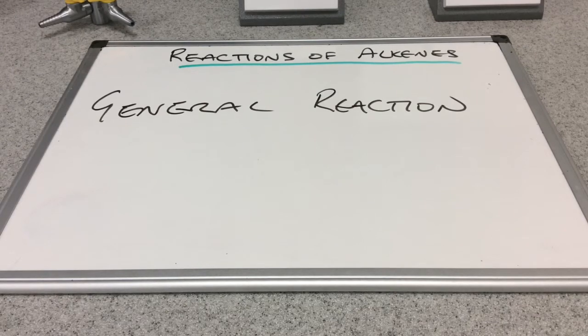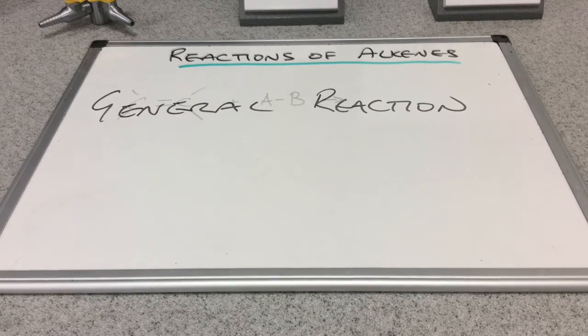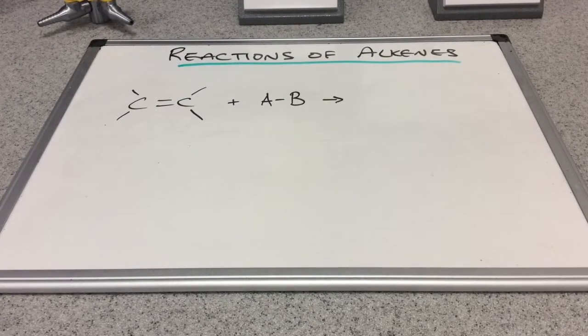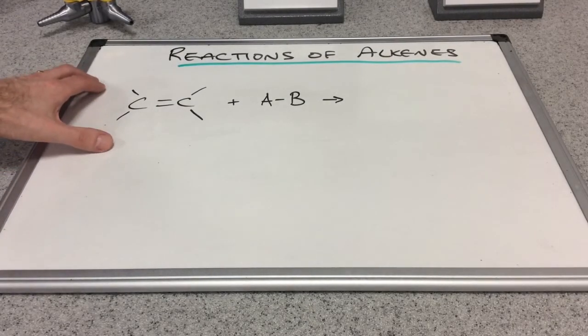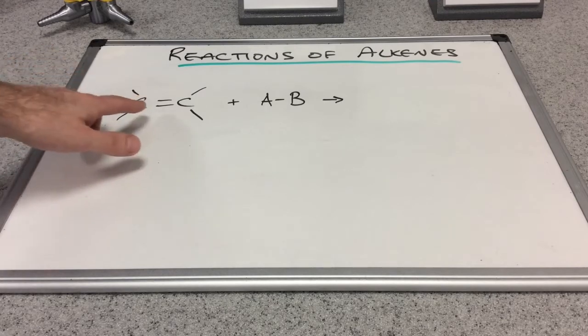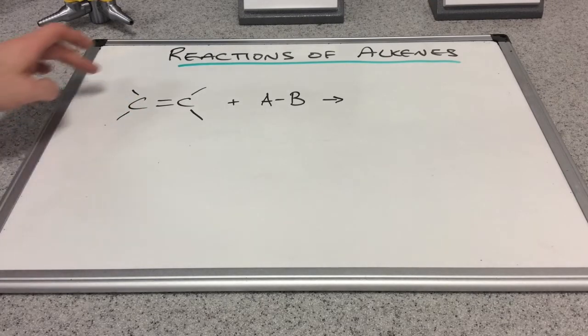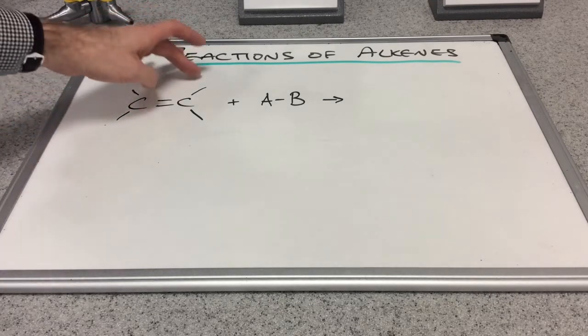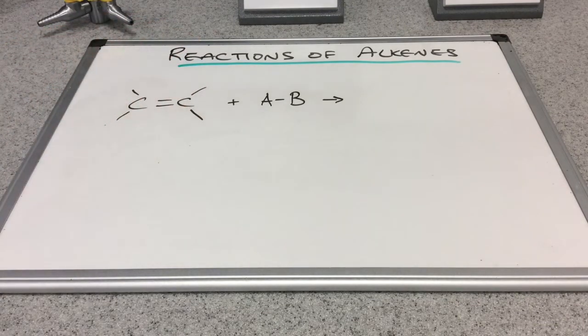In this first reactions of alkenes video, I'm going to take a look at the general reaction that takes place when alkenes react. You can see on the board I've written up the general structure of an alkene with one carbon-carbon double bond. I'm not specifying what's on these bonds here—that's not really important for this video.